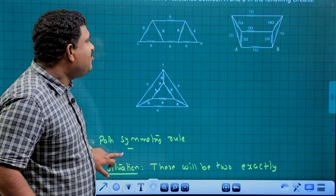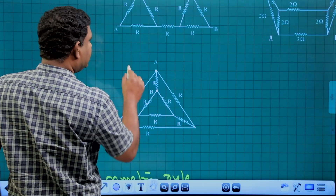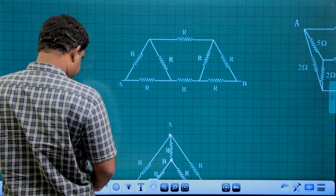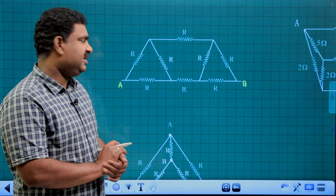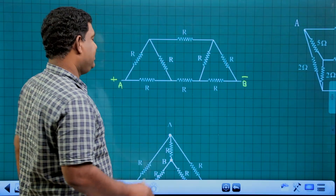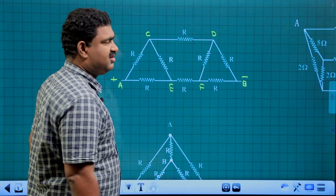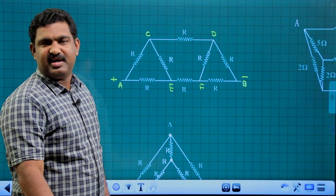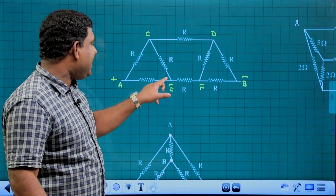For the first question, A is the initial point and B is the final point. The cell is connected positive to A and negative to B. The circuit has points C, D, E, and F. There are two paths: path one is A–C–D–B with resistances R, R, R; and path two is A–E–F–B with resistances R, R, R. These are two similar paths.